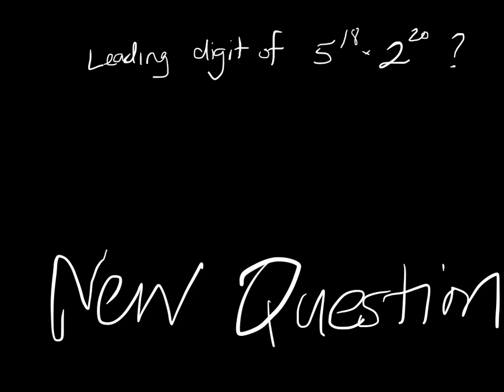I'm writing it huge because it's so easy to do this problem. I can take 5 to the 18 times 2 to the 20. And what I'm going to do is I'm going to give 18 of those 2s to the 18 5s. Which makes 10 to the 18. So I'm going to write it like this.